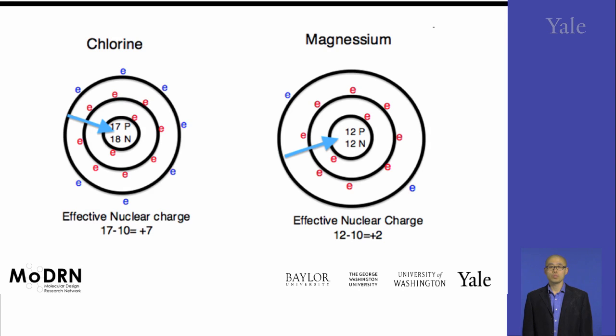Apparently, the pull effect of the electrons from the nuclei is much stronger for chlorine. Therefore, the atomic radius is smaller for chlorine than magnesium.